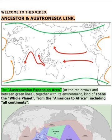Welcome to this video: Ancestor and Austronesia Link. The Austronesian Expansion Area, shown by the red arrows and between green lines, together with its environment, kind of spans the whole planet — from the Americas to Africa, including all continents.